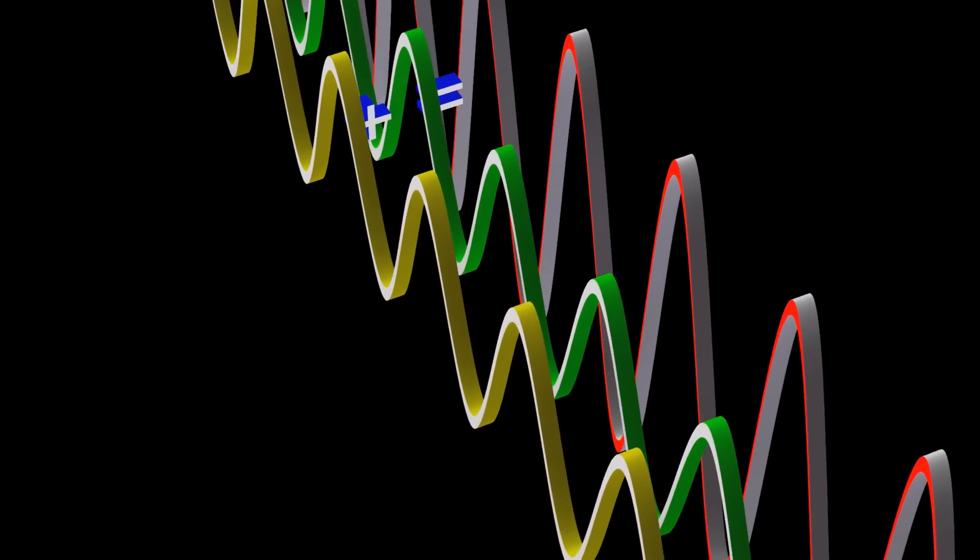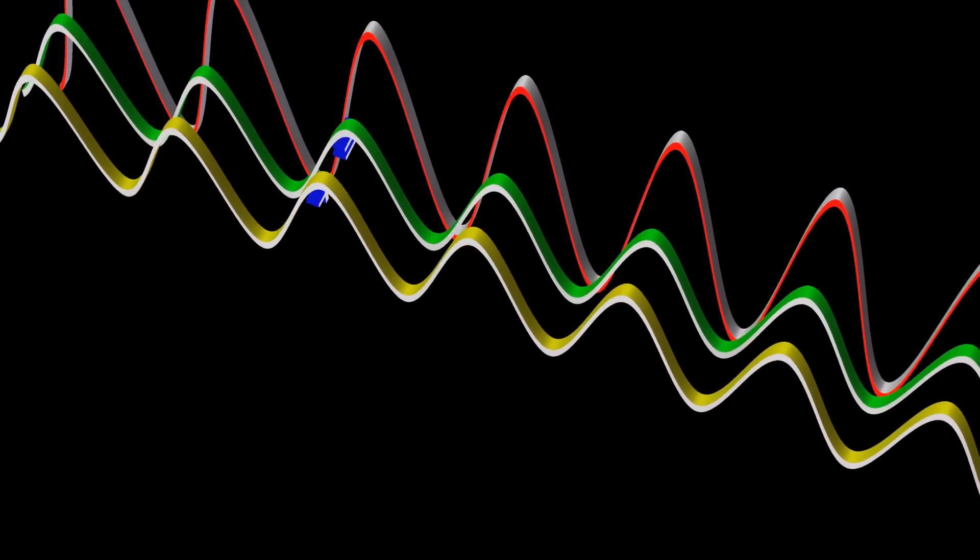If we have waves with the same amplitude and speed, but moving in opposite directions, then we produce what we refer to as a standing wave.